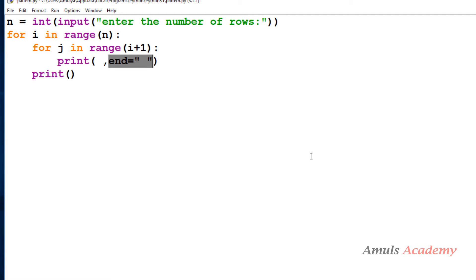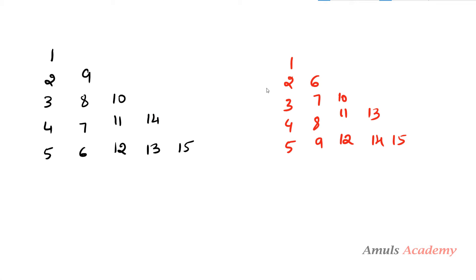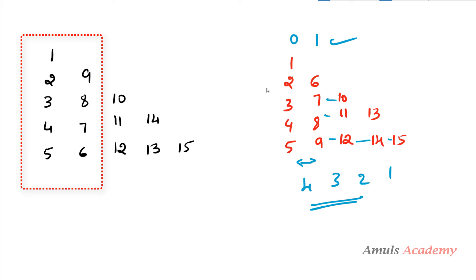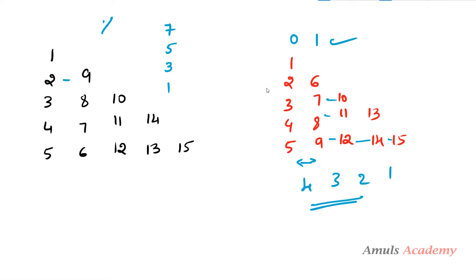Now we want to figure out what values to print. In the previous pattern we found the difference between columns: for example 6 minus 2 is 4, 7 minus 3 is 4 — a common difference. But here the differences are 7, 5, 3, 1 — there is no common difference, so we can't use that approach and need to think of something else.